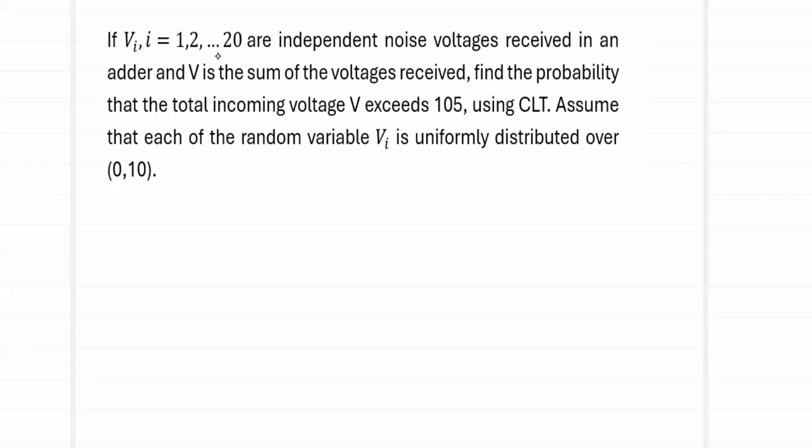If Vi, i equal to 1, 2 up to 20 are independent noise voltages received in an adder and V is the sum of the voltages received, find the probability that the total incoming voltage V exceeds 105 using central limit theorem. Assume that each of the random variables Vi is uniformly distributed over (0,10).